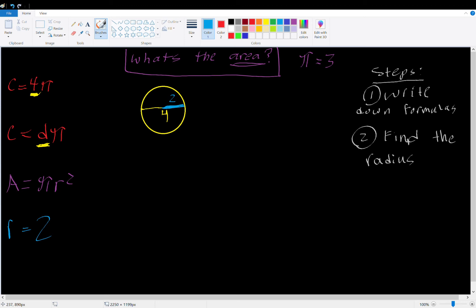Perfect. So, we wrote down our formulas. We found the radius. What's next is going to be, the next step is we're going to plug in radius into the formula for area. We're going to plug in the radius into the formula for the area.